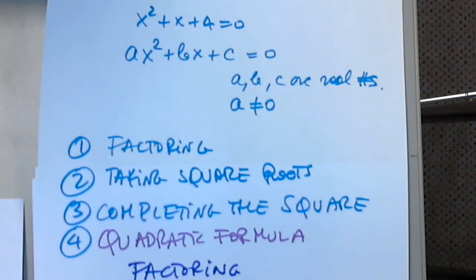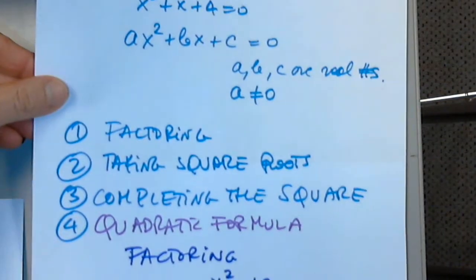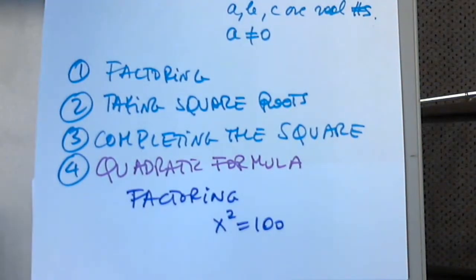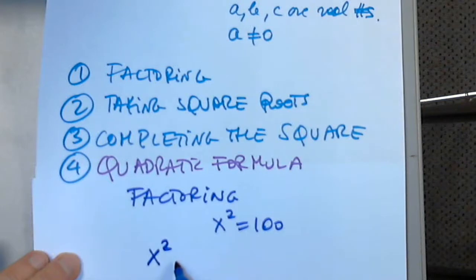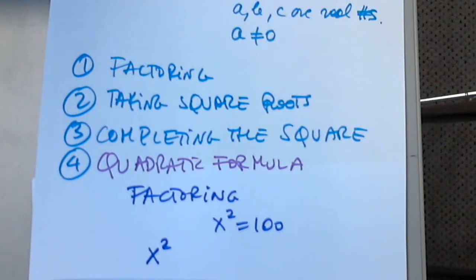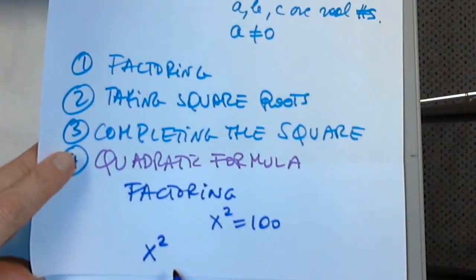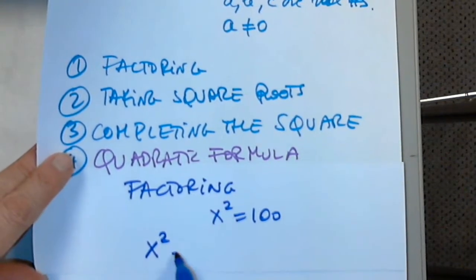Let's solve x squared equals 100 by factoring. Move everything to one side: x squared minus 100 equals 0. The polynomial is in descending order, no greatest common factor, and this is a binomial. So I try the special product formulas — this fits the difference of squares.